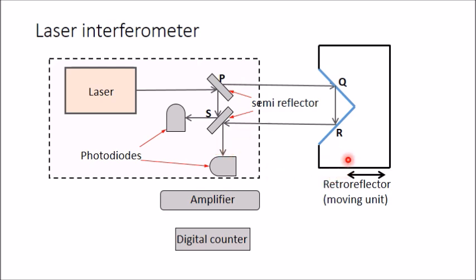During movement of the retro-reflector, which moves along with the machine slide, the photodiode will detect alternately dark bands and light bands. These fringes are transferred to the amplifier and through the amplifier to the digital counter.